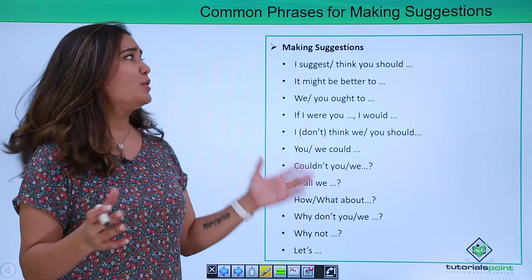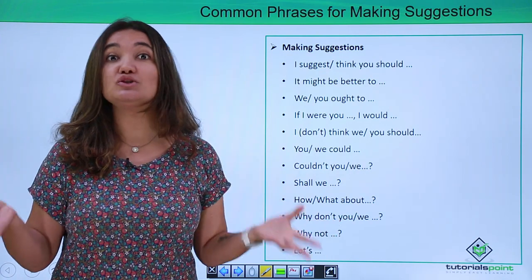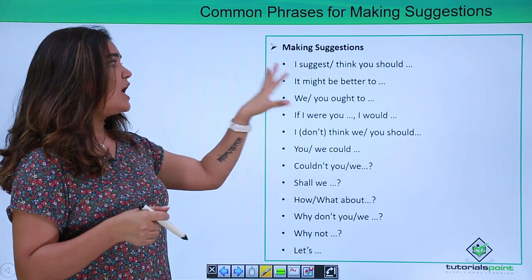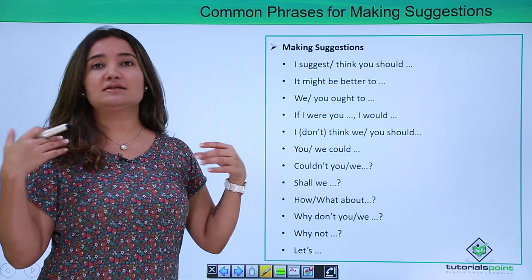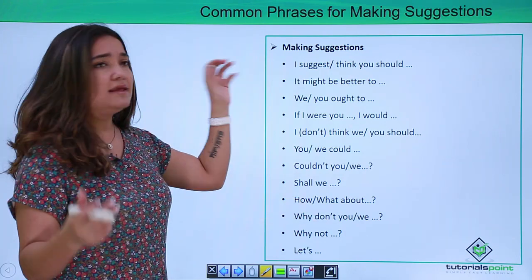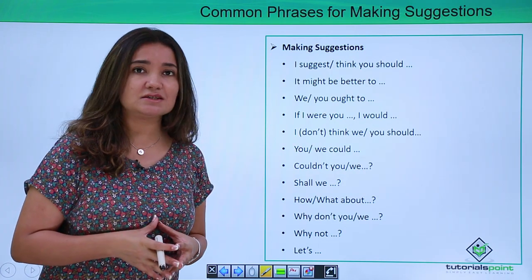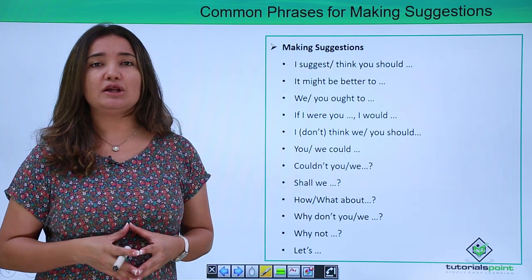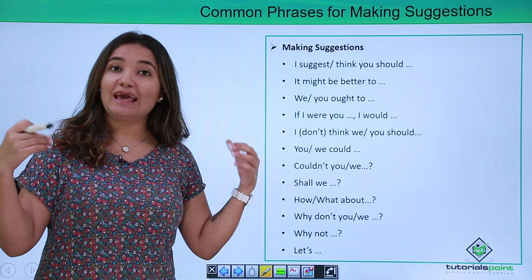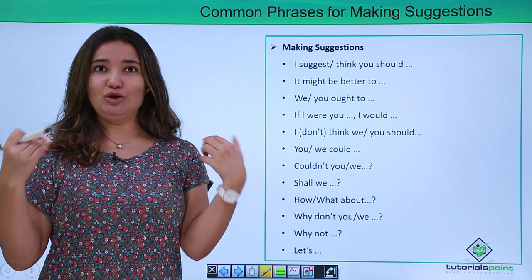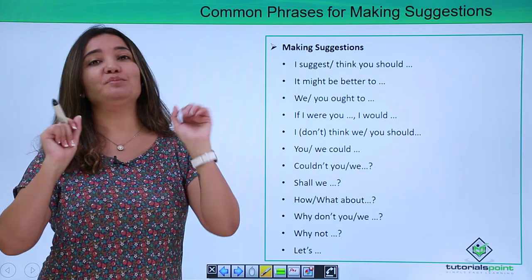How about making suggestions? This is a long list of phrases you can use. First: 'I suggest' or 'I think you should.' 'I suggest' is the simplest and easiest way, or you can say 'I think you should.' For example: 'I think you should go ahead and talk to so-and-so.' Next: 'It might be better to.' This is a more nuanced way — you are being very subtle and polite about your suggestion.